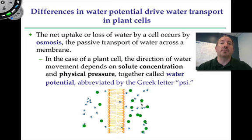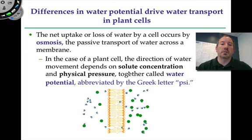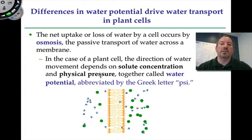The two factors that influence water potential or the movement of water are solute concentration — the dissolved solutes in the water on one side of the cell versus the other side — that could be glucose, sucrose, sodium, any solute. Increasing solute lowers the water potential. And then there's also pressure. Pressure could be positive or negative. Collectively, solute concentration and physical pressure make up your water potential, abbreviated by the Greek letter psi.